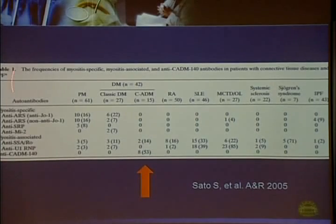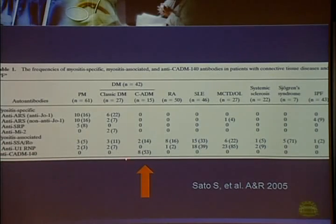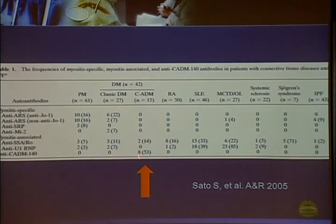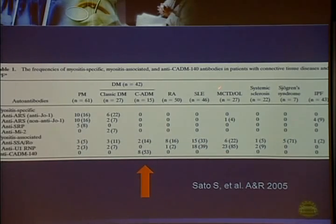A study by a Japanese group shows that anti-CADM-140 antibodies only occur in patients with clinically amyopathic dermatomyositis, but not in classic dermatomyositis, polymyositis, or other autoimmune diseases such as rheumatoid arthritis and lupus.